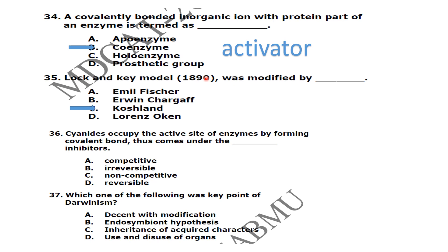The lock and key model was modified by Koshland — the modification is called the induced fit model. The induced fit model was given by Koshland. Substrates are copied by the active site of an enzyme by forming a covalent bond — this comes under irreversible inhibitors.